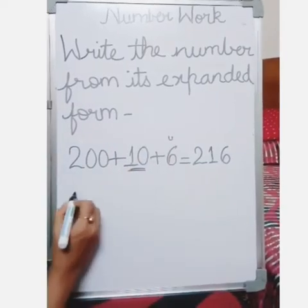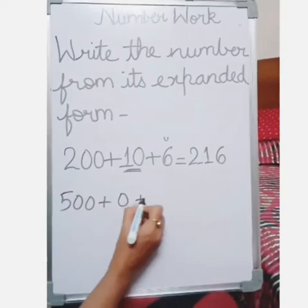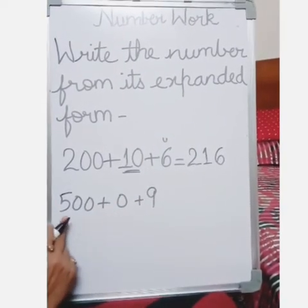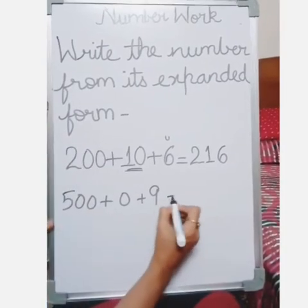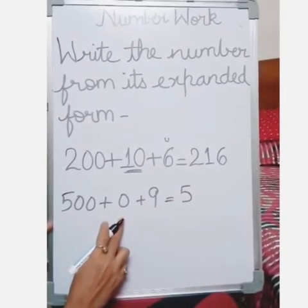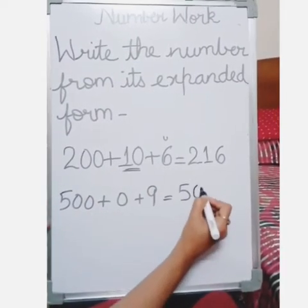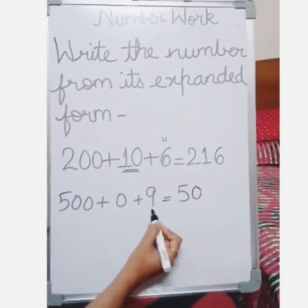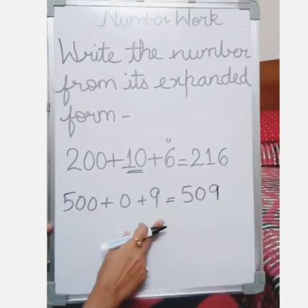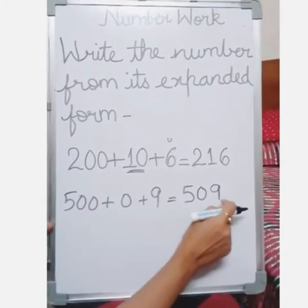Let's take one more example: 500 plus 0 plus 9. How many hundreds are there? It is 500, so you write just 5. How many tens are there? It is 0 — that means 0 tens — so just a 0. And how many units? 9. So the number from the expanded form 500 plus 0 plus 9 is 509.